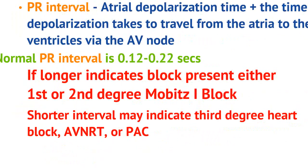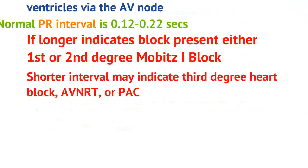It is really important to note the PR interval on an EKG, because a lengthening or shortening of this interval can indicate certain pathologies. If the PR interval is longer than normal, this indicates there is some delay in conduction from the atria to the ventricles, indicating that it is likely at the AV node.